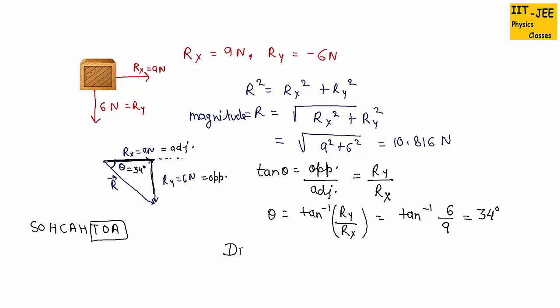So we can write the direction as we are going clockwise. Like this, this direction is clockwise. So 34 degrees clockwise from positive x-axis. This is the direction of resultant force.